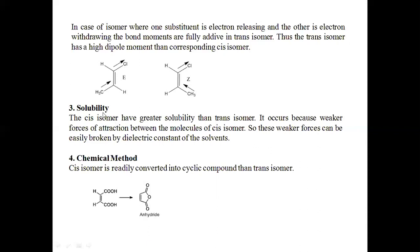The next method is solubility. The cis isomer has greater solubility than the trans isomer. This happens because there is a weaker intermolecular force of attraction between the molecules of the cis isomer, so cis isomer molecules are more easily separated by solvent molecules — meaning the cis isomer dissolves more easily in solvents compared to the trans isomer.